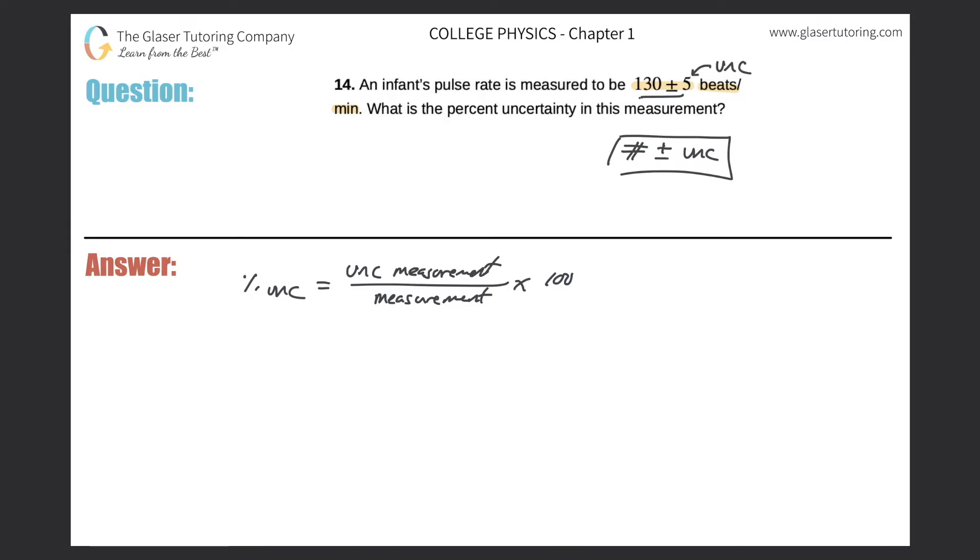Okay, so to find the percent uncertainty, let's take the uncertainty that's found in the measurement, which we said was 5. So we can plug it in for the uncertainty of the measurement.